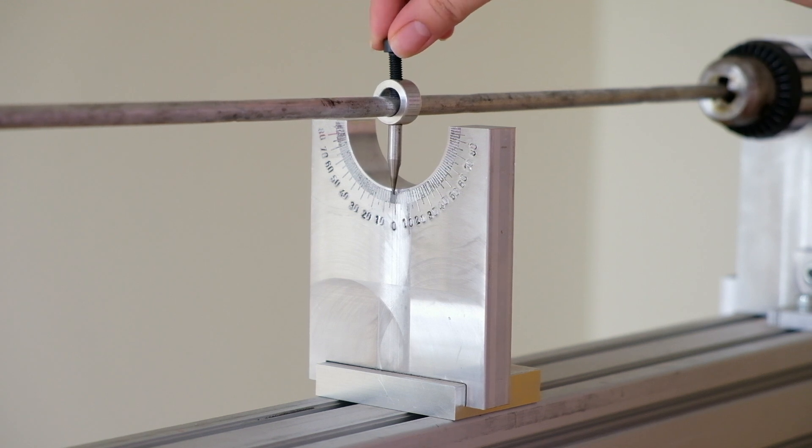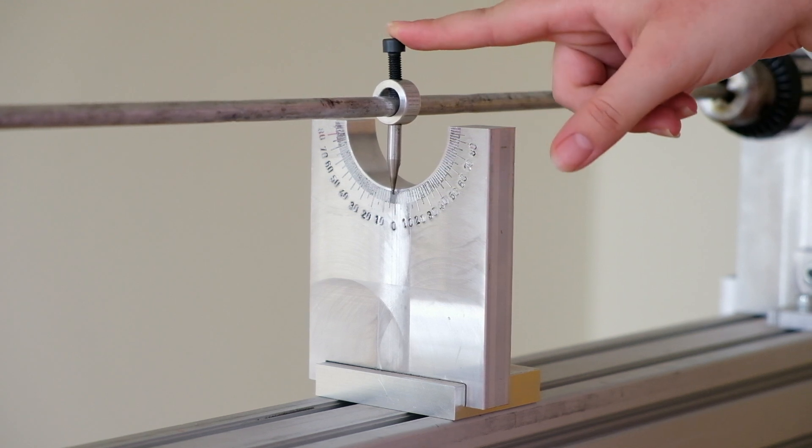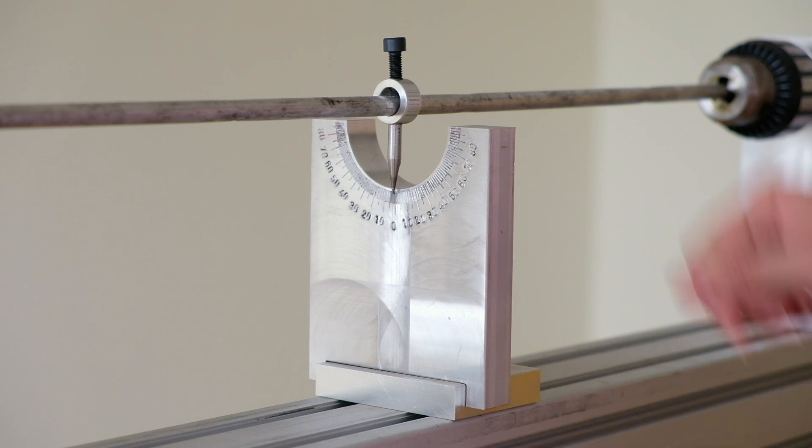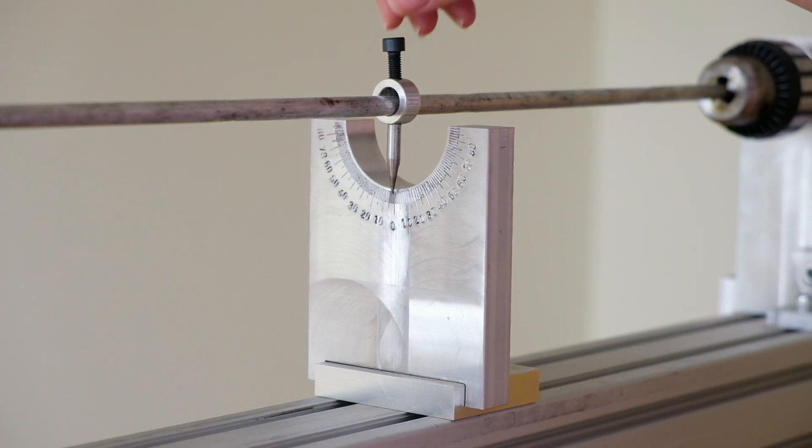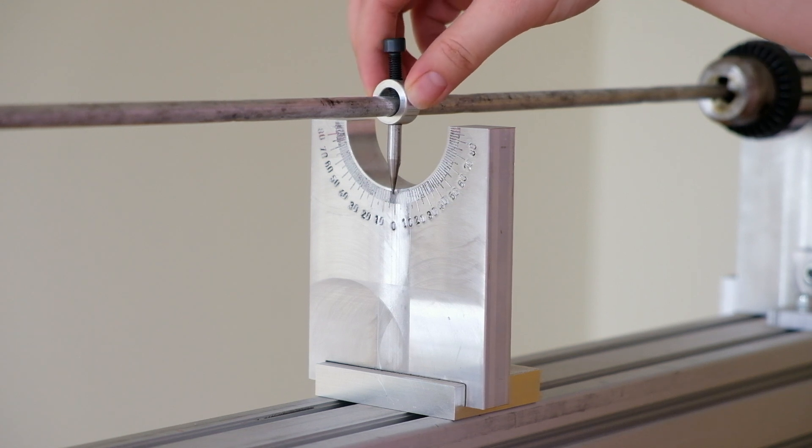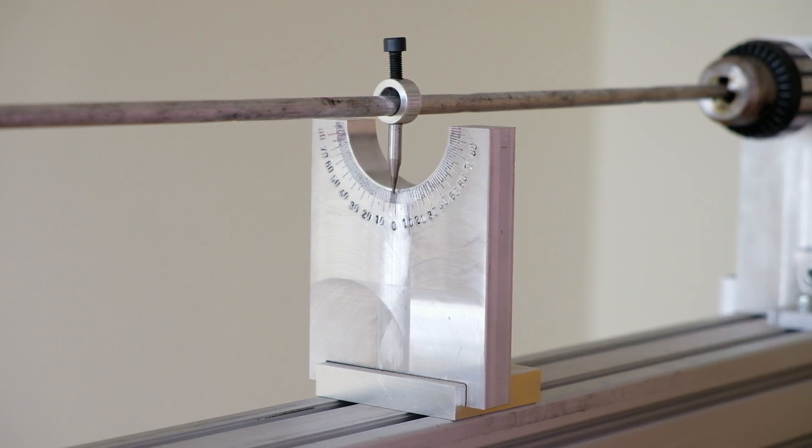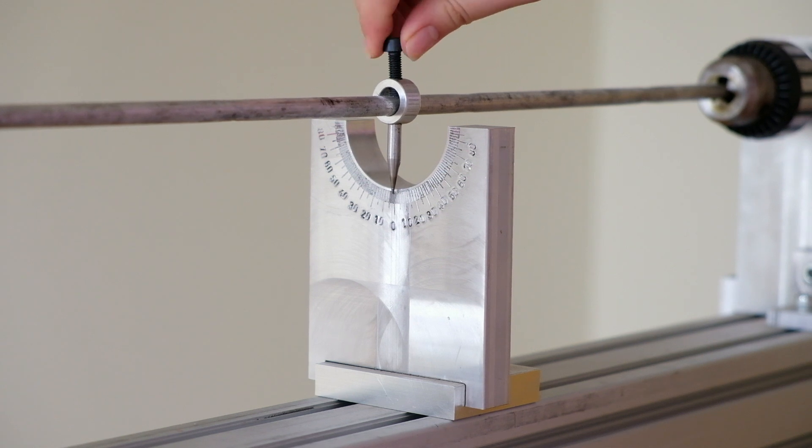This is the dial that you will take your readings from. Before you begin the experiment, you have to first make sure that the dial is on zero. If it is not, you can unscrew the bolt, adjust it accordingly, and then screw it again. Just make sure it is screwed on tightly.